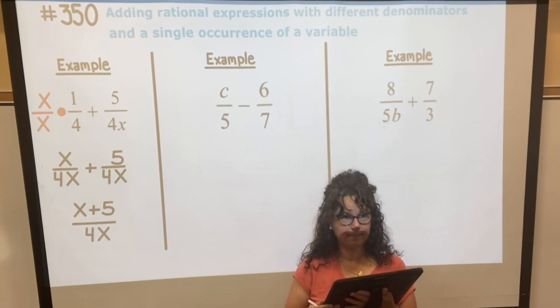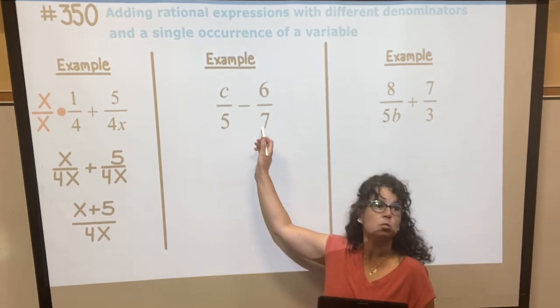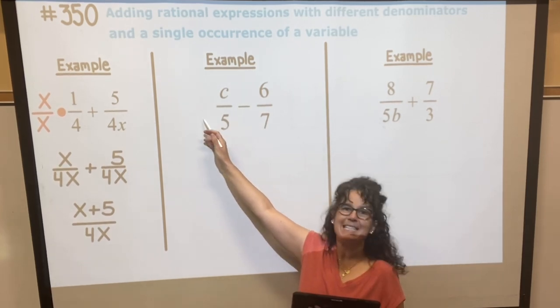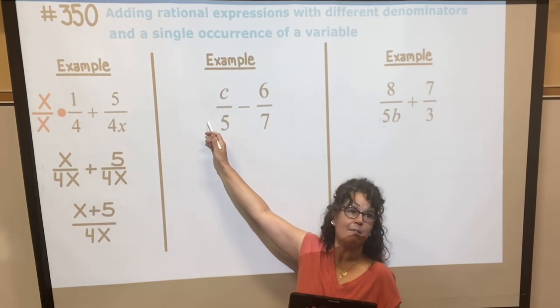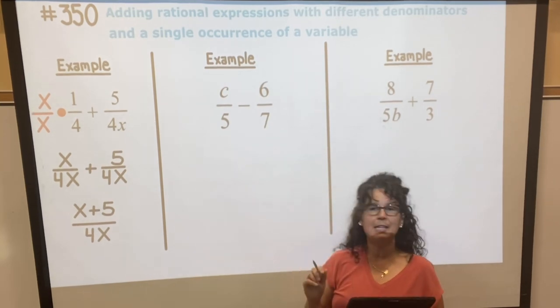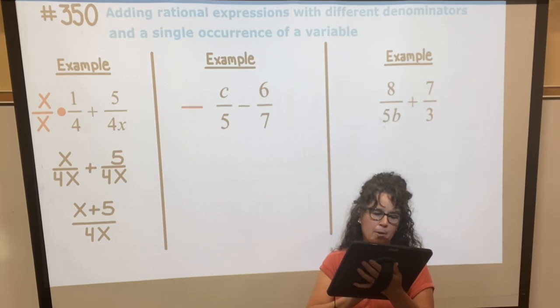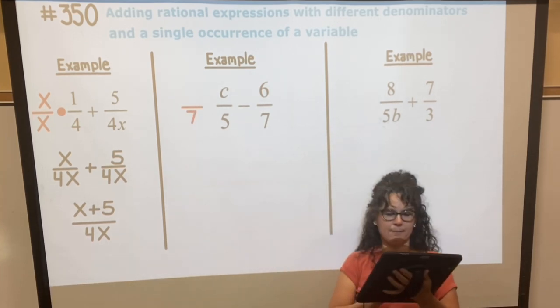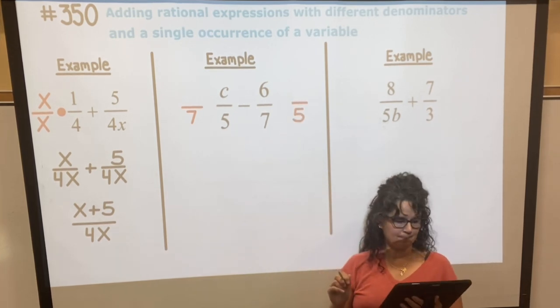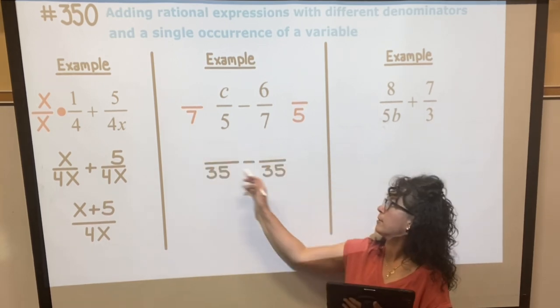In this one I need those to be the same again. So to make these ones the same, 5 if I could put a 7 with it I'd have a 5 and a 7. And then the bottom here, the 7, if I put a 5 with it I'd have a 5 and a 7 and they would be the same. So I want to put a 7 with the 5 and I want to put a 5 with the 7. Then my new denominators would be 35.